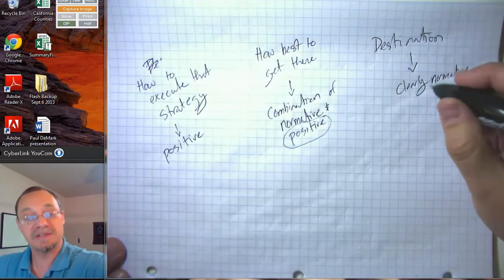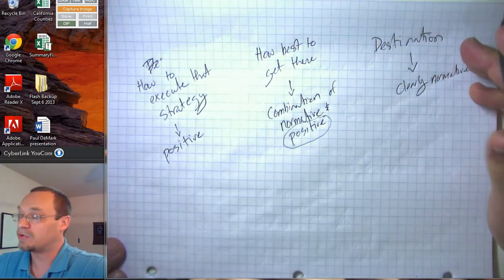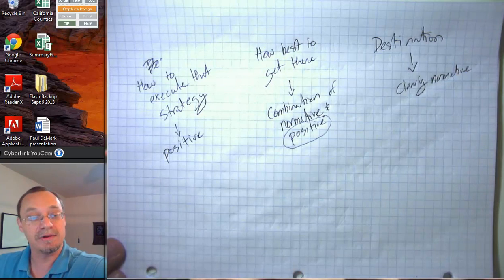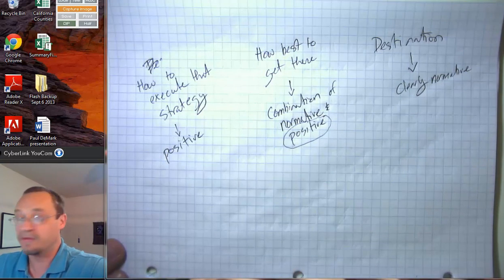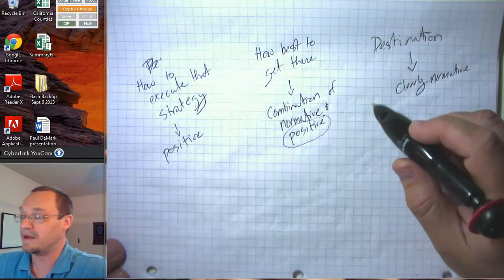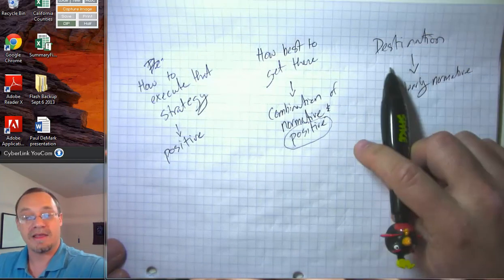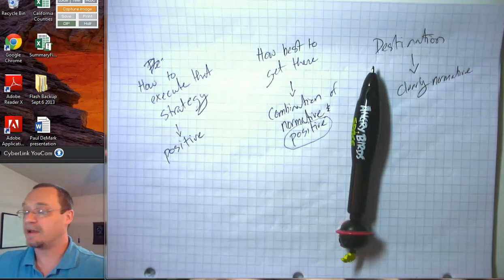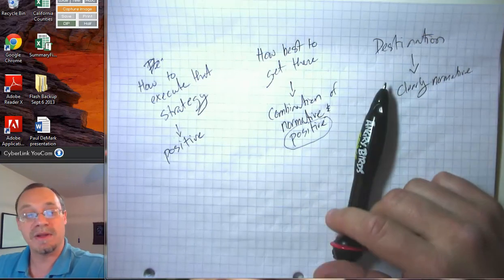So this is an important distinction. We try whenever possible to sort things out into whether they're positive or normative. But sometimes there will be things that fall right on this middle line. That's one of the things that economists like to emphasize so they can really understand what people are arguing about.